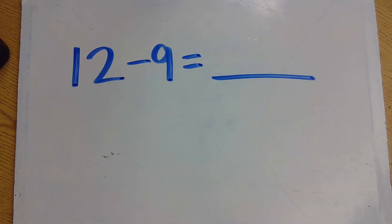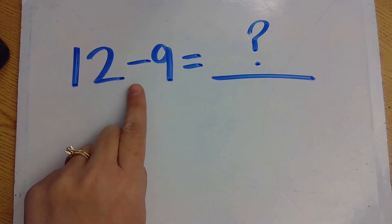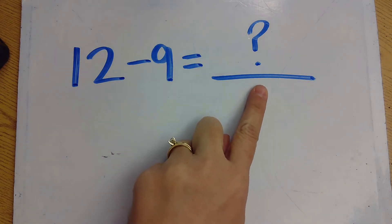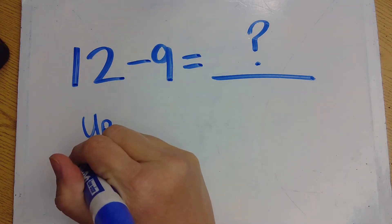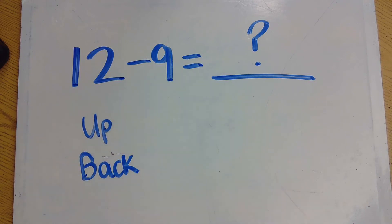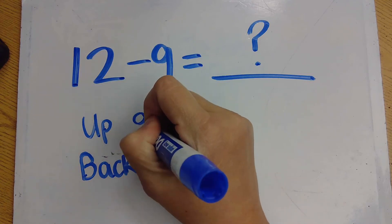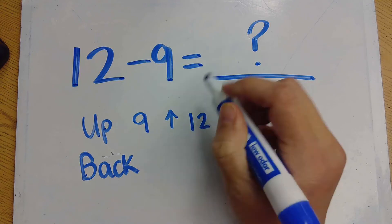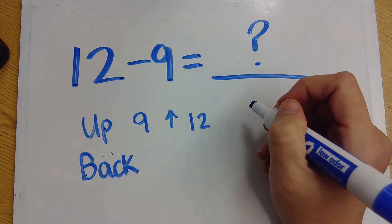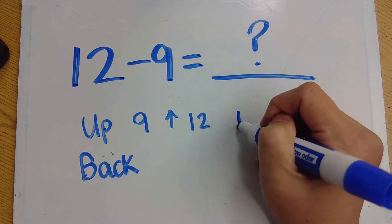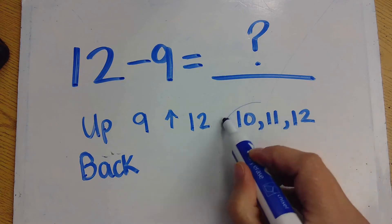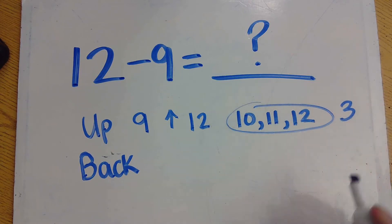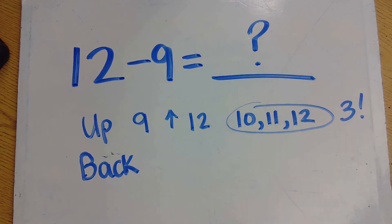I want you to take a look at this new number model. I see 12 minus 9 equals a mystery number. Go ahead and try to solve this problem using the counting up strategy and the counting back strategy. If you use the counting up strategy, you're going to start at 9 and count up until you get to 12. So I say 9, then write down the next numbers: 10, 11, 12. How many numbers did you just write? Did you say 3? That's correct.